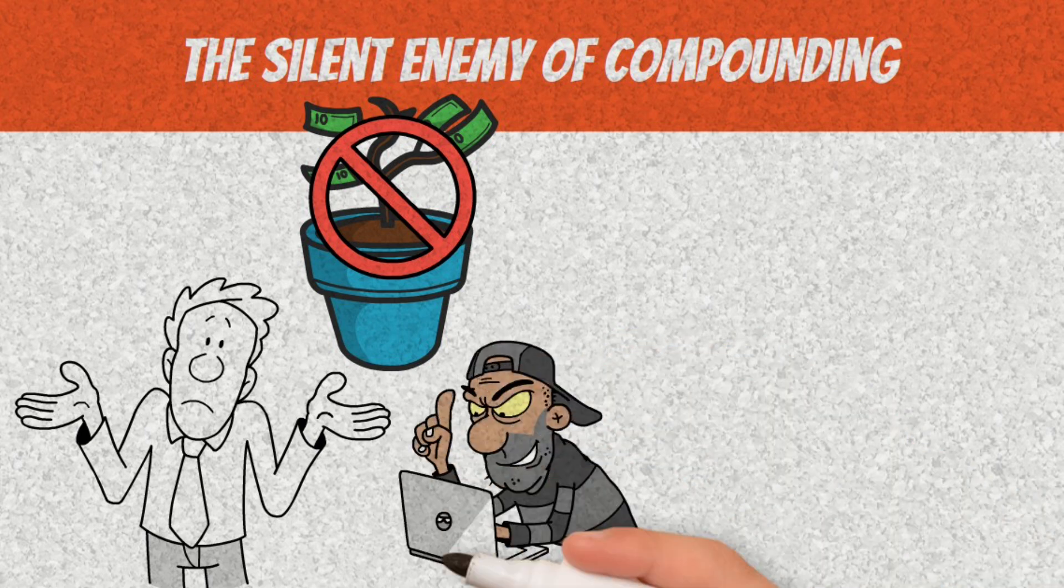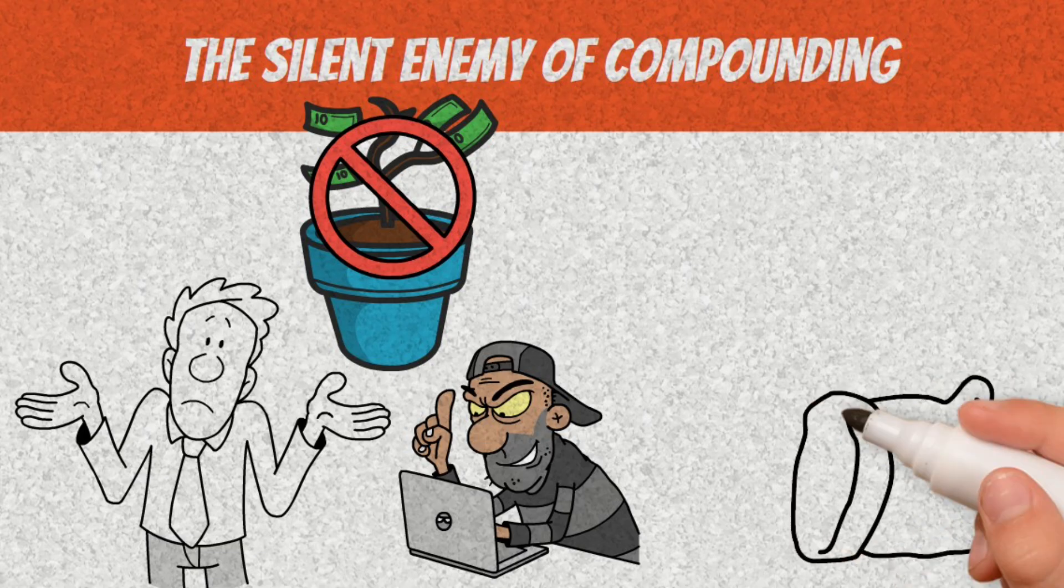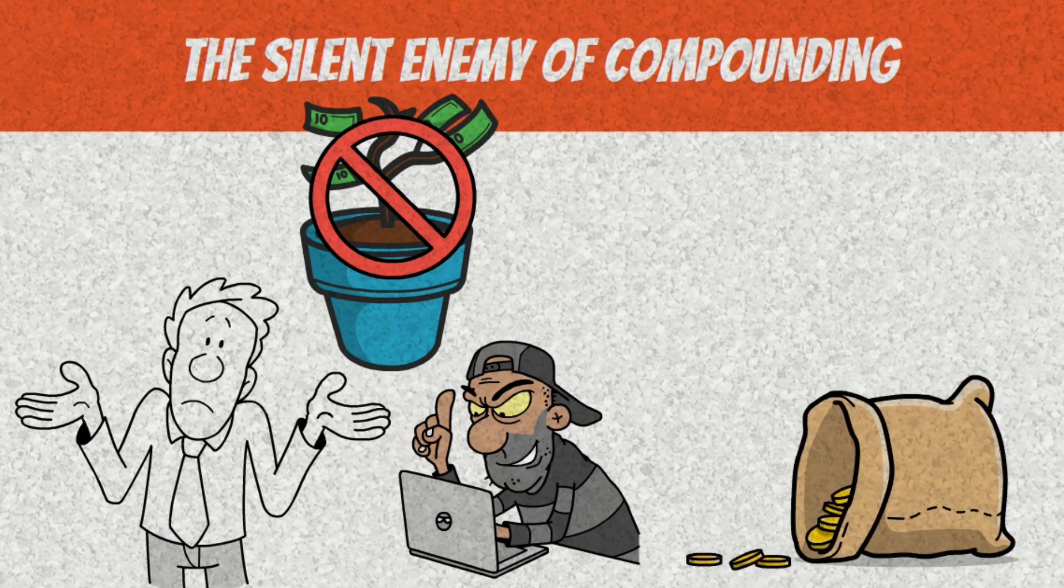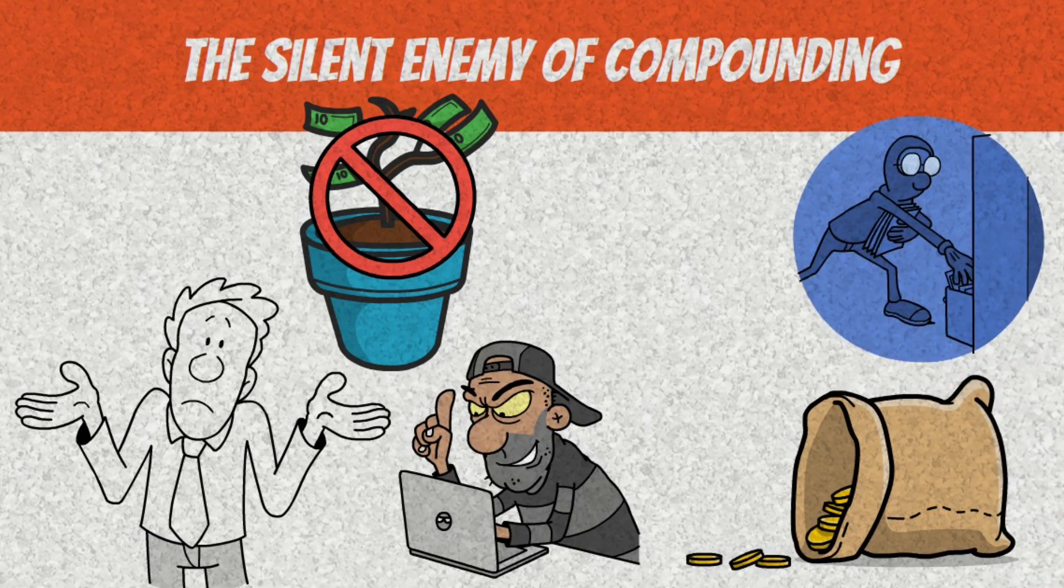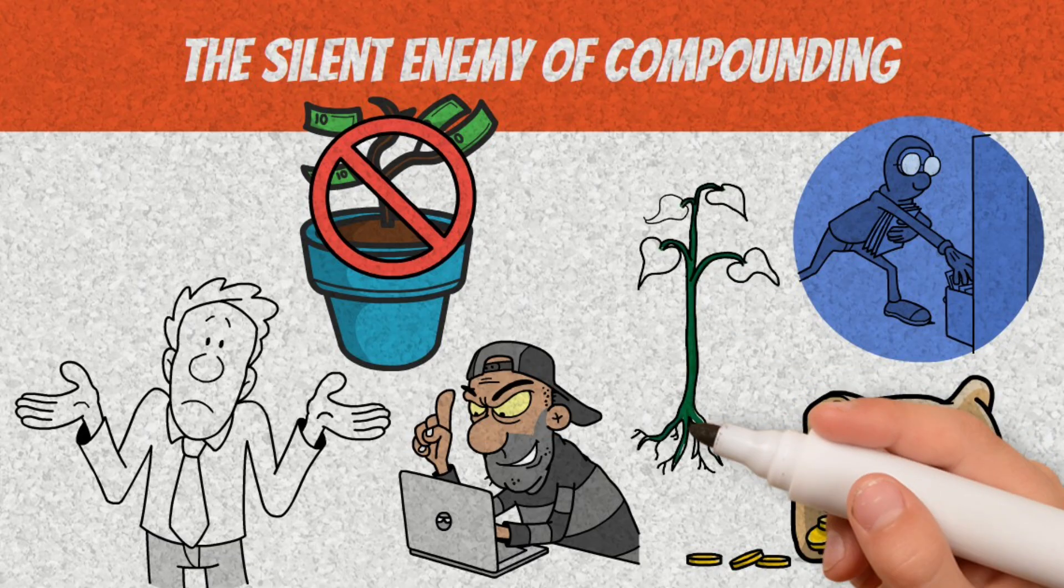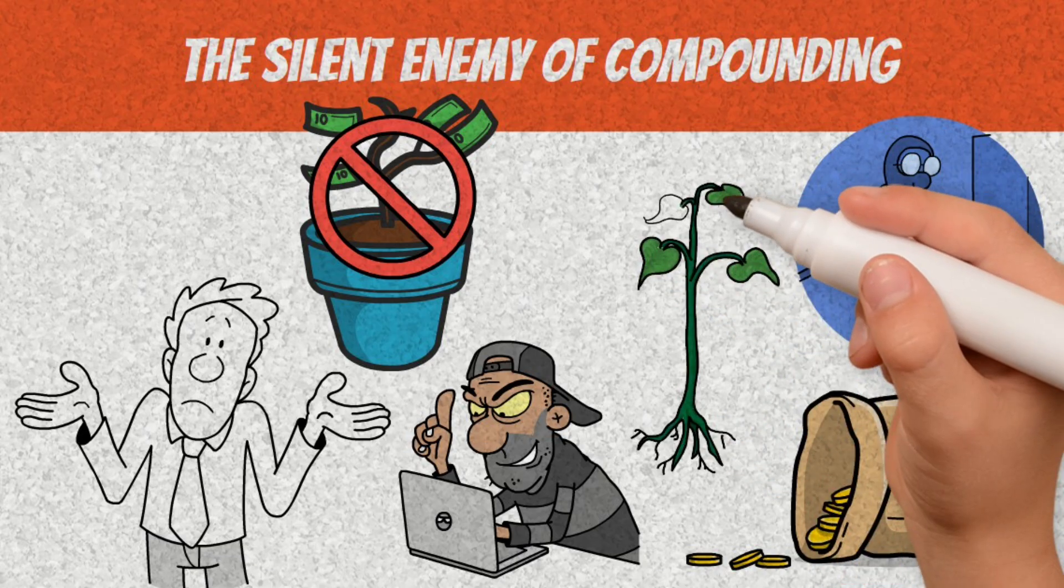The first enemy is premature withdrawal. Every time you take part of the capital or profits to spend on something unnecessary, you're cutting the base on which the compound effect works. It's like ripping the roots from a tree that's still growing. You weaken all future potential.